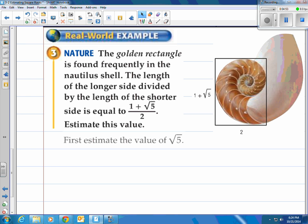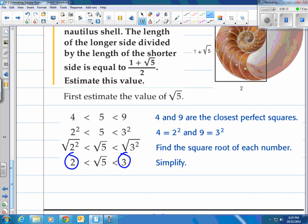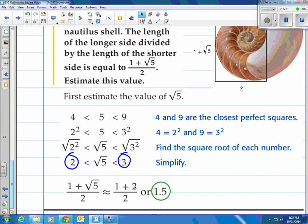Well what do we do first? Estimate the value of the square root of 5. That's going to be between the two numbers 4 and 9 which are perfect squares. And when you square root those, those are 2 and 3. If you take that and say well it's closest to 2 because 4 is closest to 5, you estimate it out at 2. Then you do 1 plus 2 you get 3. You take 3 divided by 2 and you get 1.5 and that'd be your answer.